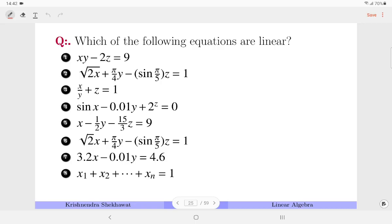Let's quickly see this question. Please do try to solve it by yourself and then you can see the solution. The first one is not linear because of the presence of xy. The second one is not linear because of the presence of root x. Third one is not linear because 1 by y is there. Fourth one is not linear because 2 raised to the power z is there. Fifth, sixth, seventh, eighth are linear.